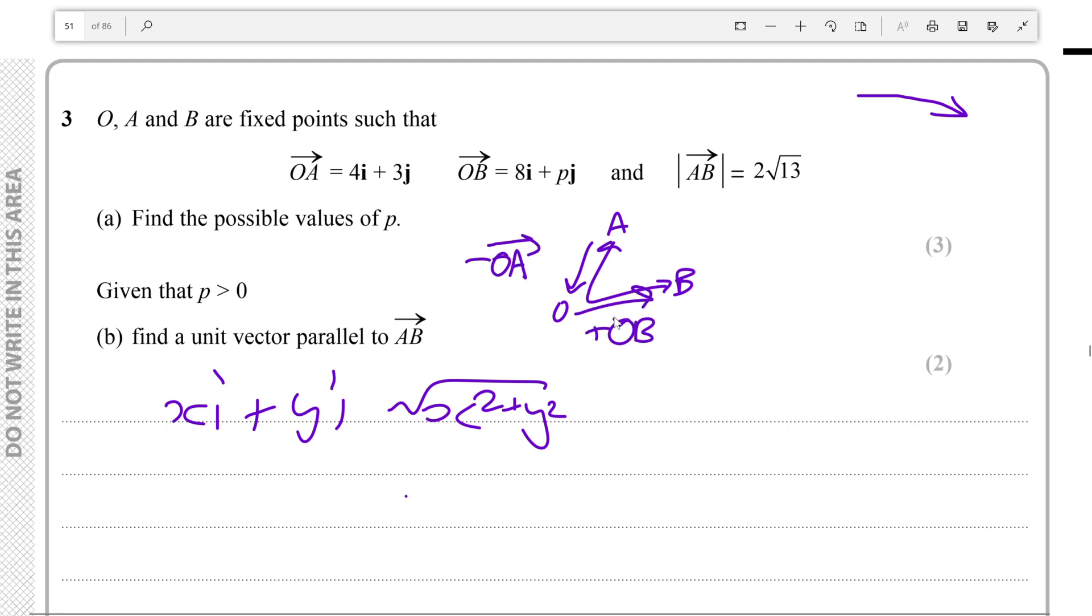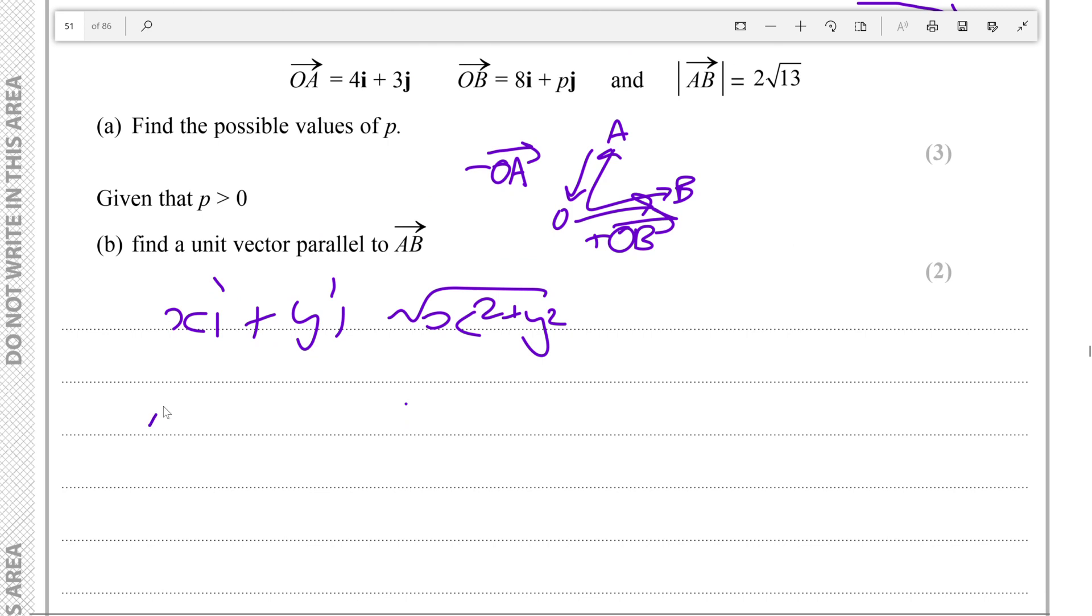So AB is equal to OB minus OA. So that is equal to 8i plus pj minus 4i minus 3j. Then we combine like terms and factorize out the i and j, you'll get that OB minus OA is 4i plus (p minus 3)j.